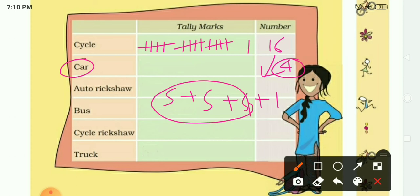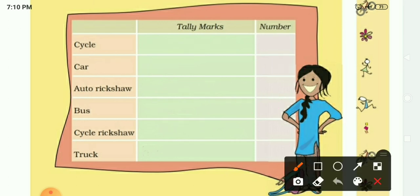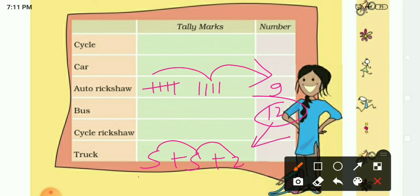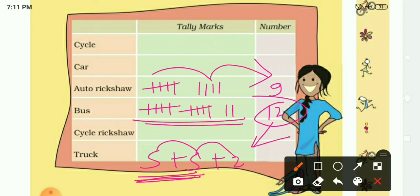Similarly, for cars with a count of 4: simply draw one, two, three, four vertical lines. For auto rickshaws with 9: make one bundle of five — four verticals with a cross — then four more vertical lines. 5 plus 4 is 9. For buses with 12: two bundles of five and two extra lines — 5 plus 5 plus 2 equals 12. In this way we can also use tally marks for counting objects.